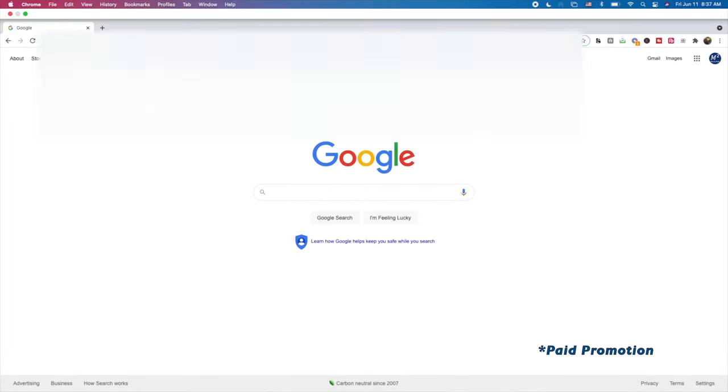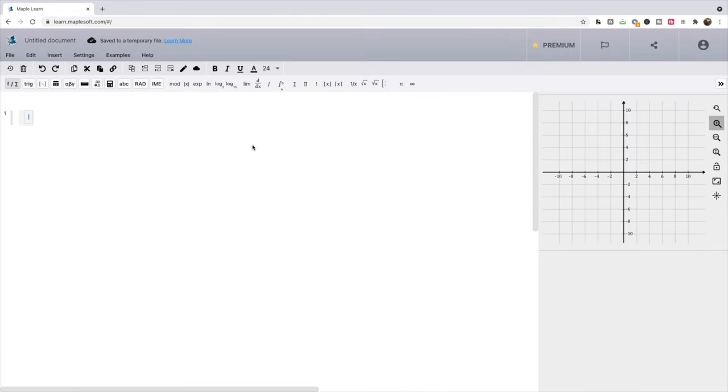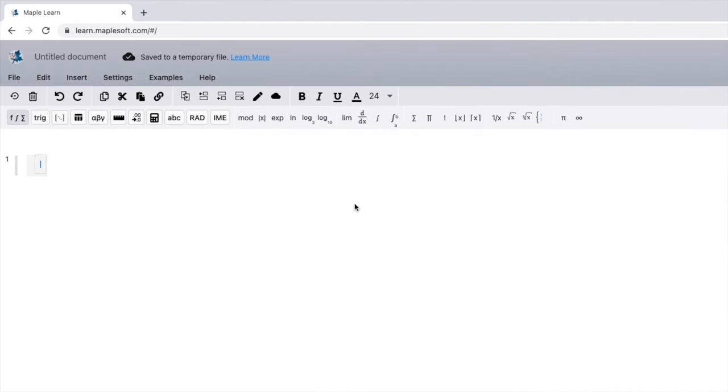We're going to go to learn.maplesoft.com, and bring up this nice little toolkit that MapleSoft has created for free here. We're going to type in our function y equals (x minus h) squared. And we have this little graph here, but we're going to give it some parameters.